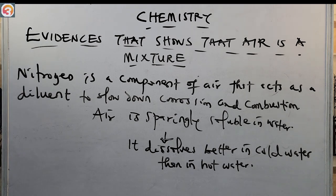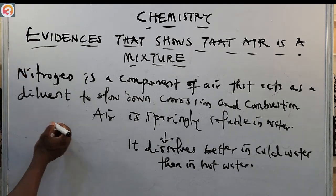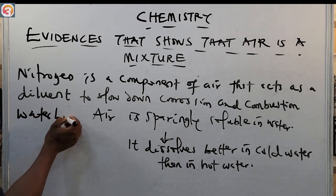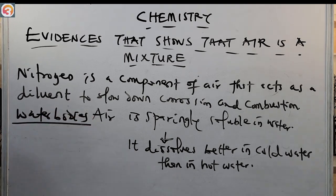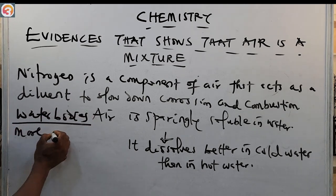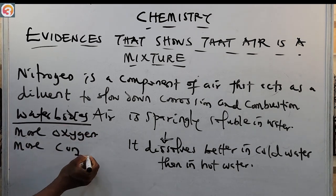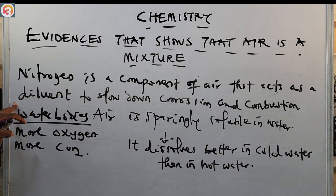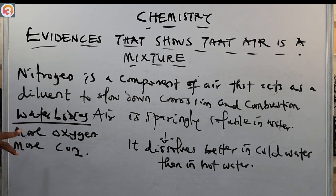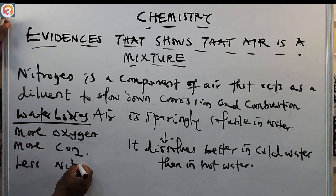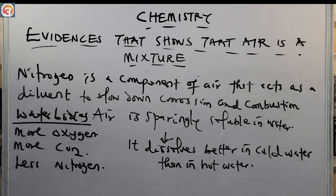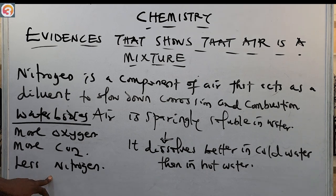The air in water bodies contains more oxygen and more CO₂, but less nitrogen than atmospheric air. Water bodies like oceans and seas contain more oxygen and more carbon dioxide than atmospheric air, and lesser nitrogen.